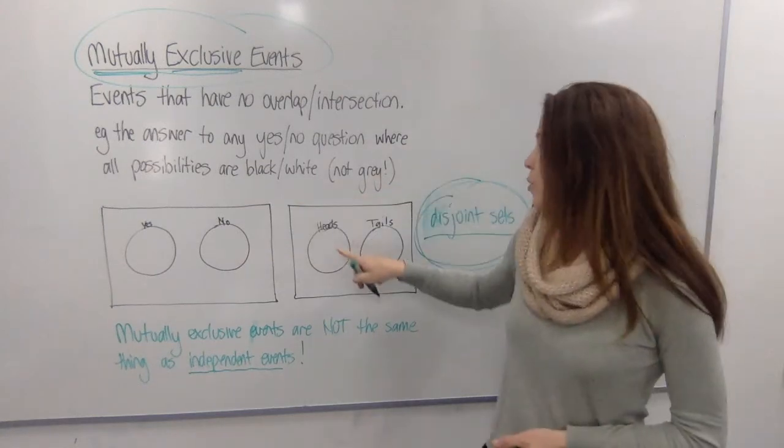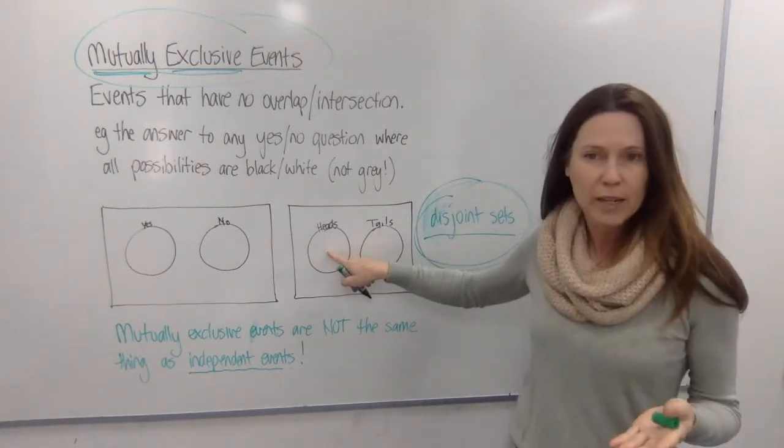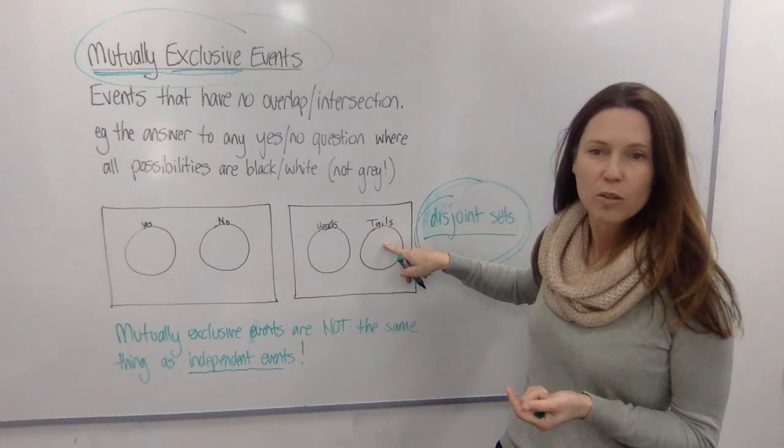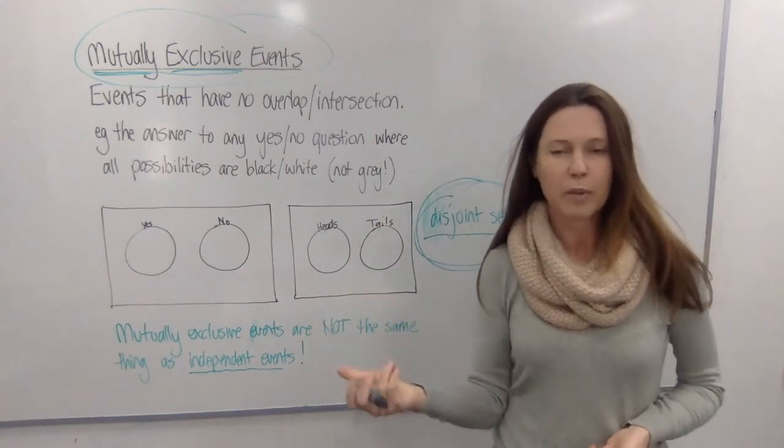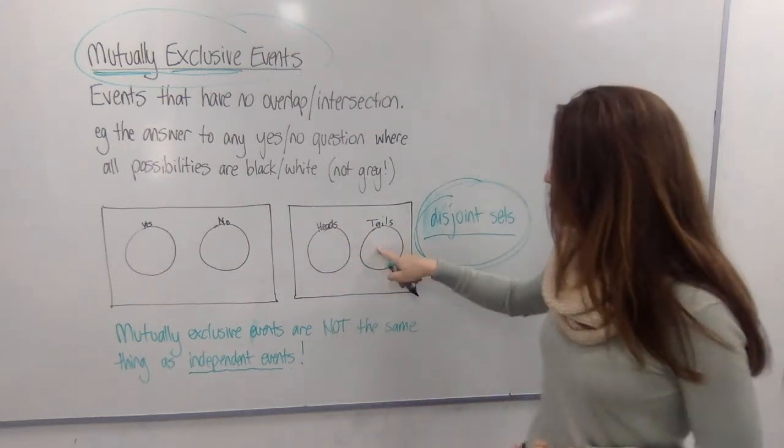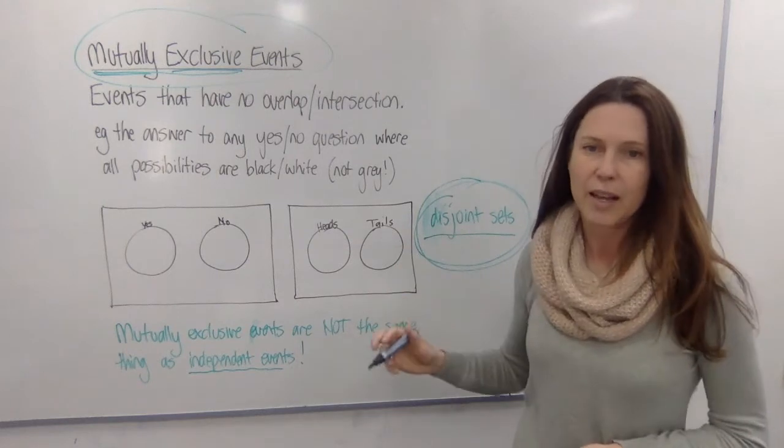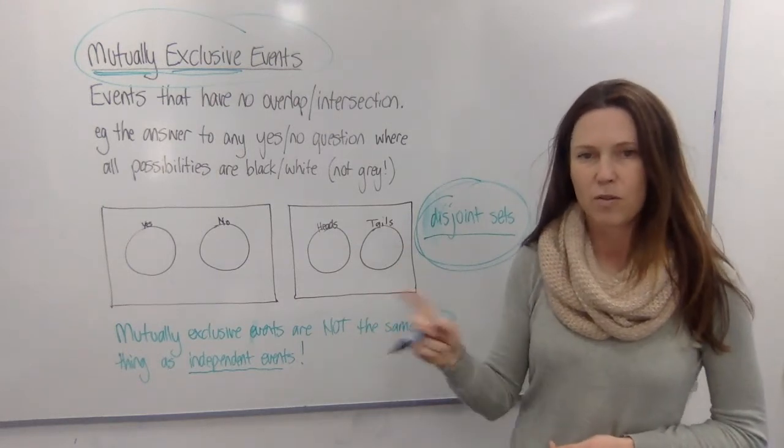Now another good example would be the event of tossing a head or the event of tossing a tail when I run the experiment flipping a coin. So they're mutually exclusive because I can't get heads and tails, it's going to be one or the other.